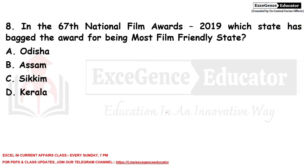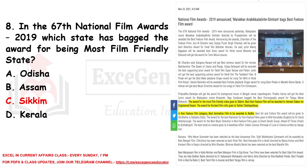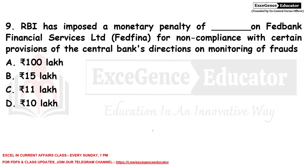In the 67th National Film Awards 2019, the award for the most film-friendly state goes to Sikkim. Best non-feature film will be awarded to Hemant Gaba for 'An Engineer's Dream.' The award for the best film critic goes to Shohini Chattopadhyay, and in the non-feature film category, best animation film is awarded to 'Radha.'